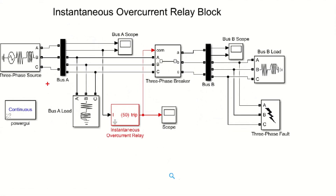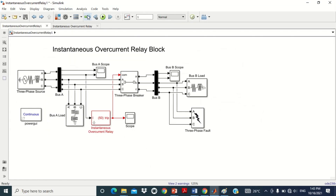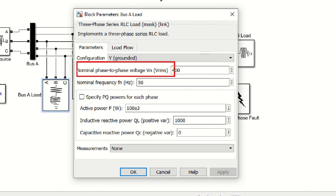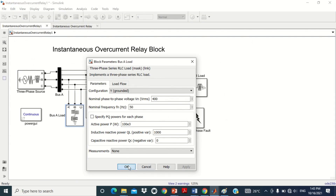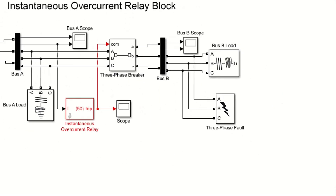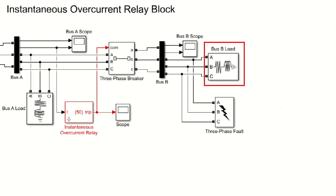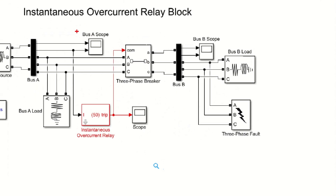Now come to the third block of the model, which consists of a three-phase series RLC load. This model uses two loads connected at Bus A and Bus B with the same parameter values. The voltage used here is 400V, the same as the source voltage, and all other values are chosen randomly. It may be noted that the load at Bus B is a very important load, so the instantaneous overcurrent relay is applied here to protect this load by disconnecting it in case of overcurrent. Two scopes are used: Scope A measures voltage and current at Bus A, while Scope B measures voltage and current at Bus B.